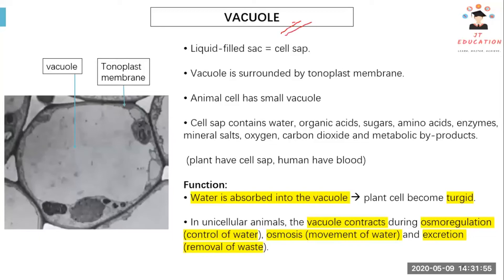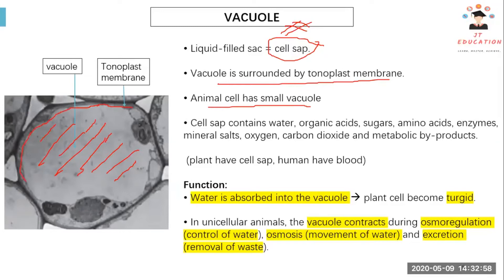The vacuole is a component found in plant cells. It is liquid-filled with cell sap and is surrounded by the tonoplast membrane. Animal cells also have vacuoles. The function of the vacuole is to store the water absorbed into the plant, which makes the plant turgid.